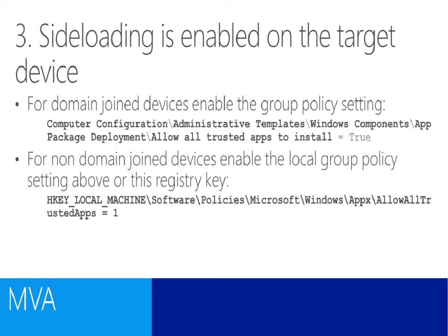The third requirement is that sideloading is enabled on the target device. On a domain-joined device, you can find the group policy setting listed on this slide and once that's been enabled, all devices subject to that policy will be able to install any sideloaded applications, assuming they're licensed to do so. If the device isn't domain-joined, there are a couple of ways to enable this setting: you can use the local group policy module, or you could manually change the registry setting if you're not deploying things using group policy.